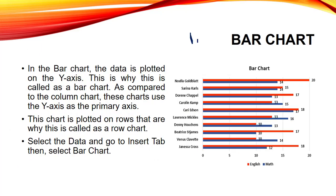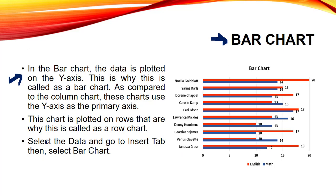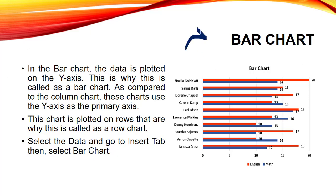Next we have bar chart, which is similar to the column chart. The only difference is that in the column chart bars are on the x-axis, whereas in a bar chart the data is plotted on the y-axis, making y-axis the primary axis. This chart is plotted on rows, which is why it is also termed a row chart. It is also used for comparison of values. To insert it, select the data, go to Insert tab, then select the bar chart option.